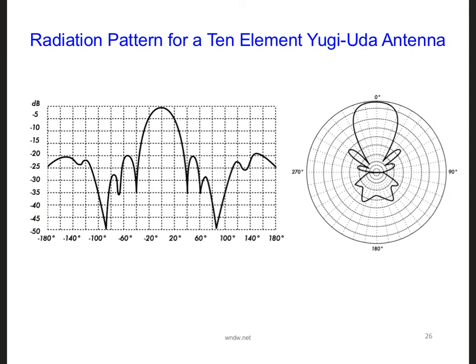In the case of a Yagi-Uda antenna, more parasitic elements, more directors, provides more gain and a narrower beam width. So here's an example of a 10-element Yagi-Uda antenna, the radiation pattern. And the kind of gain that we can expect from a Yagi-Uda antenna is about 10 to 20 dBi.